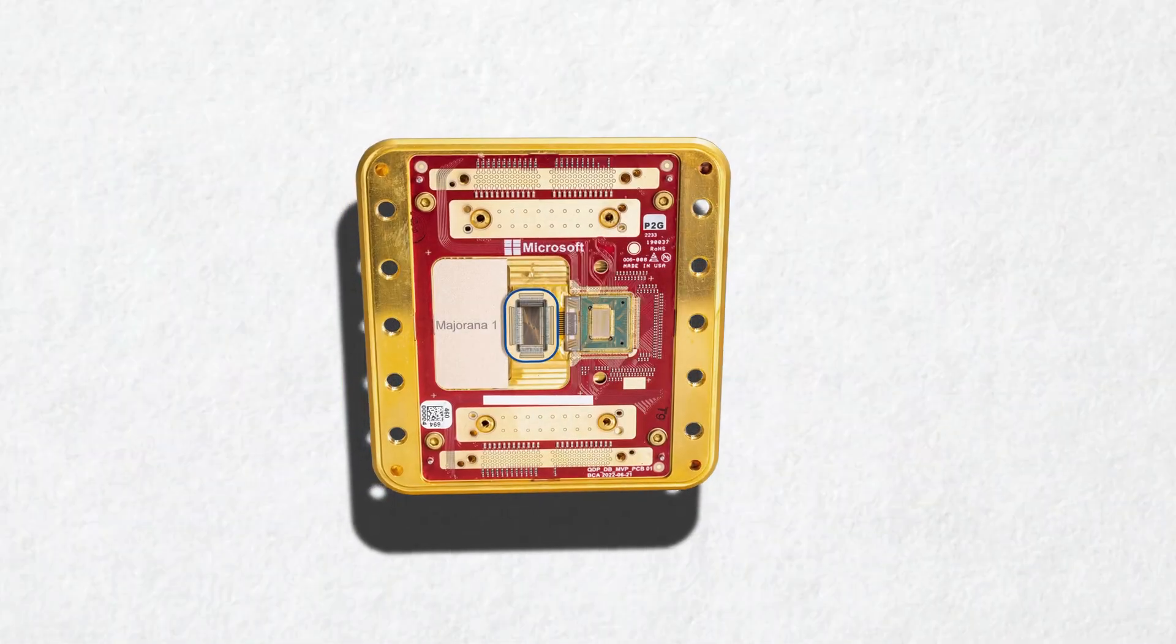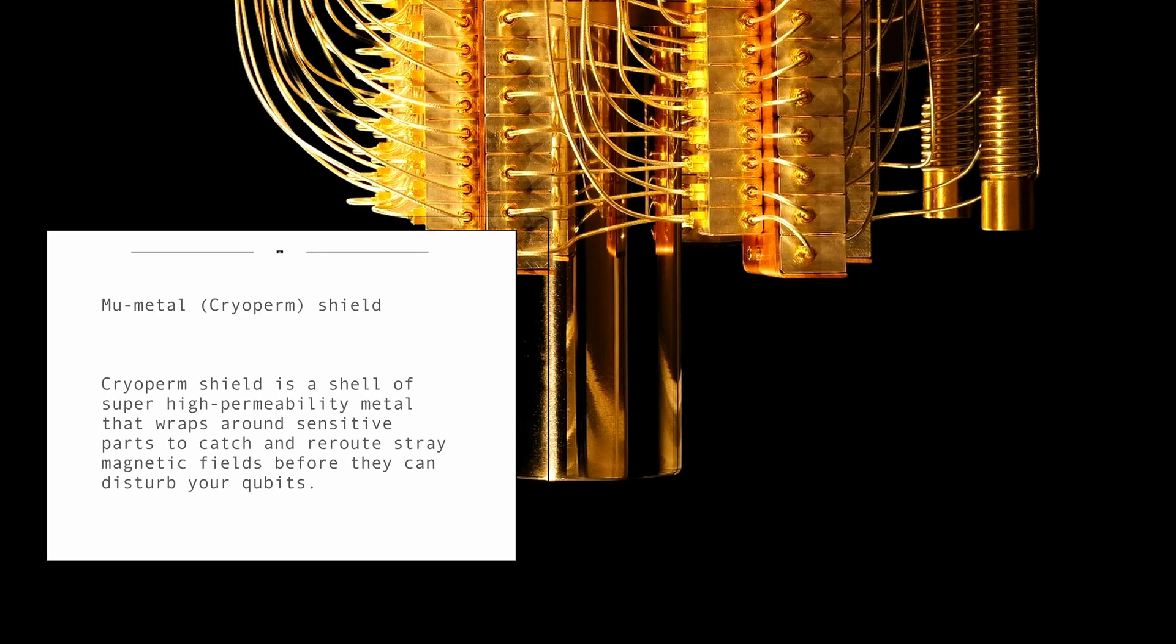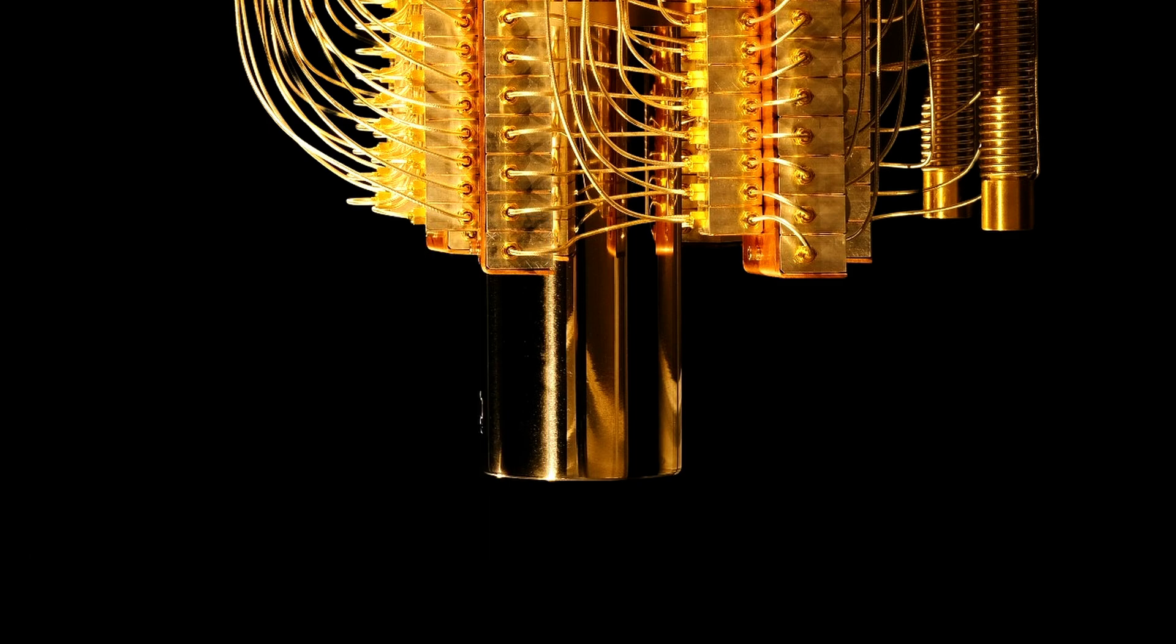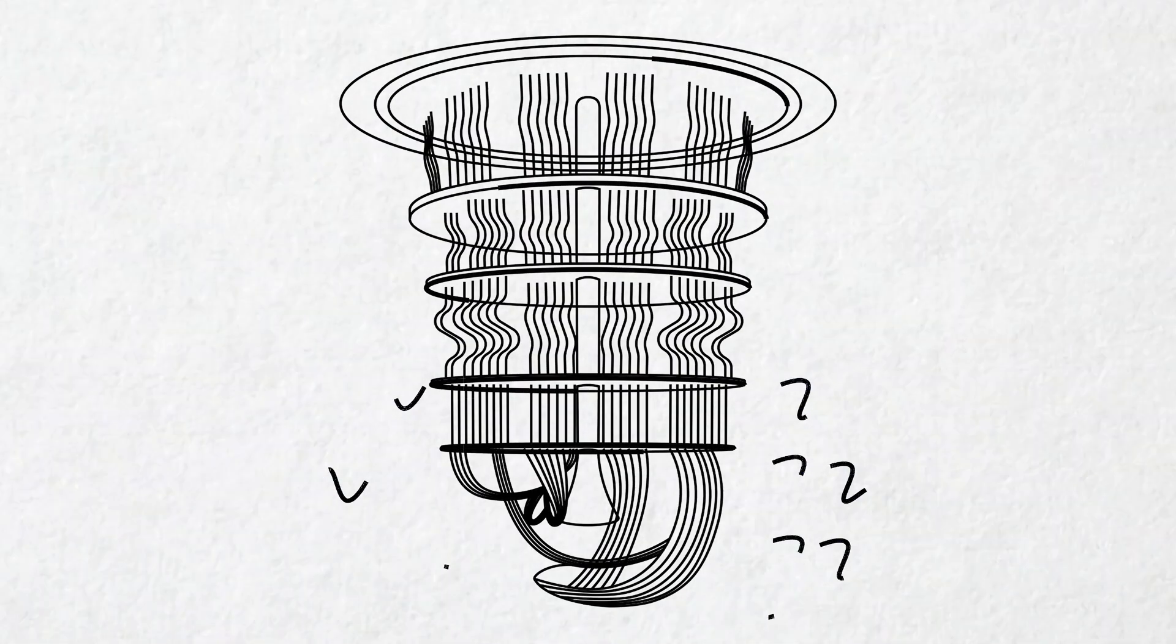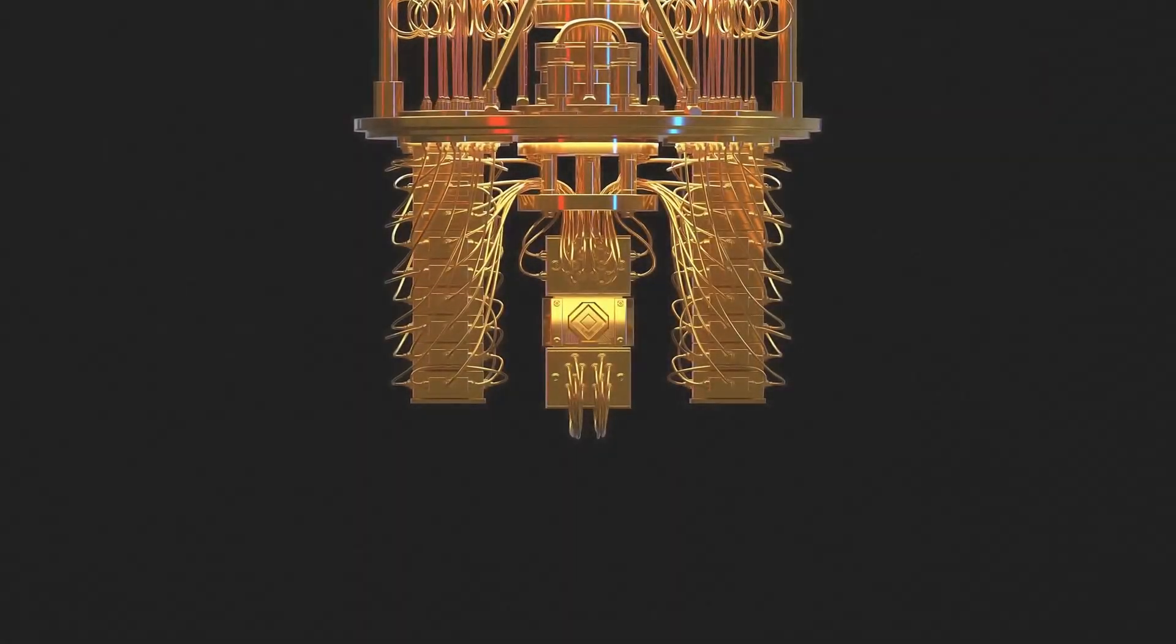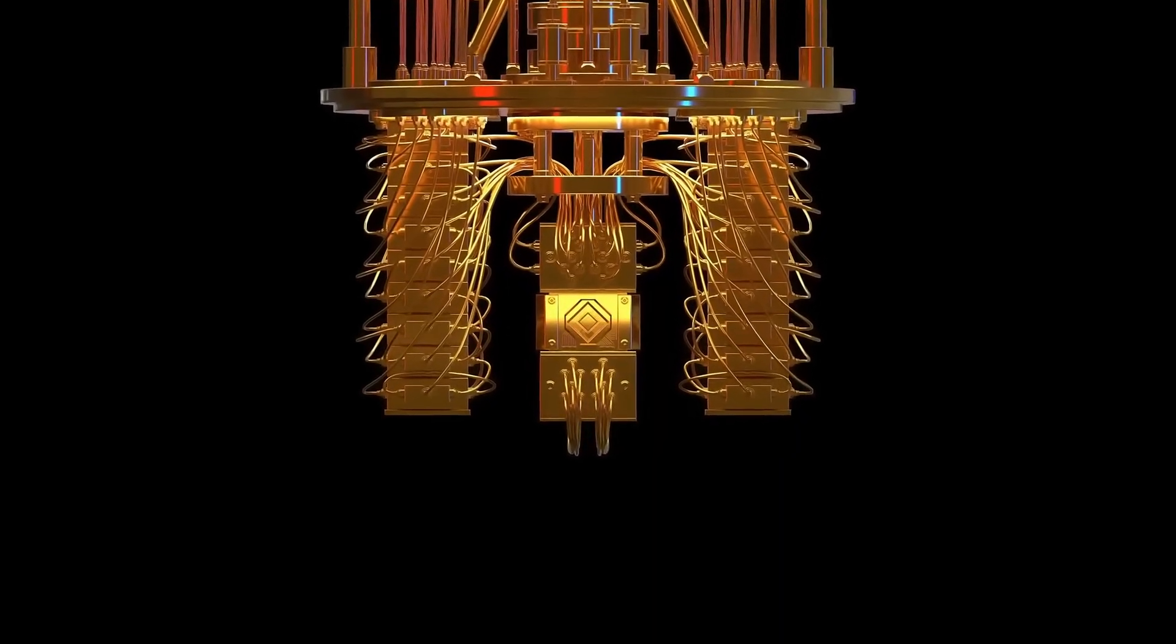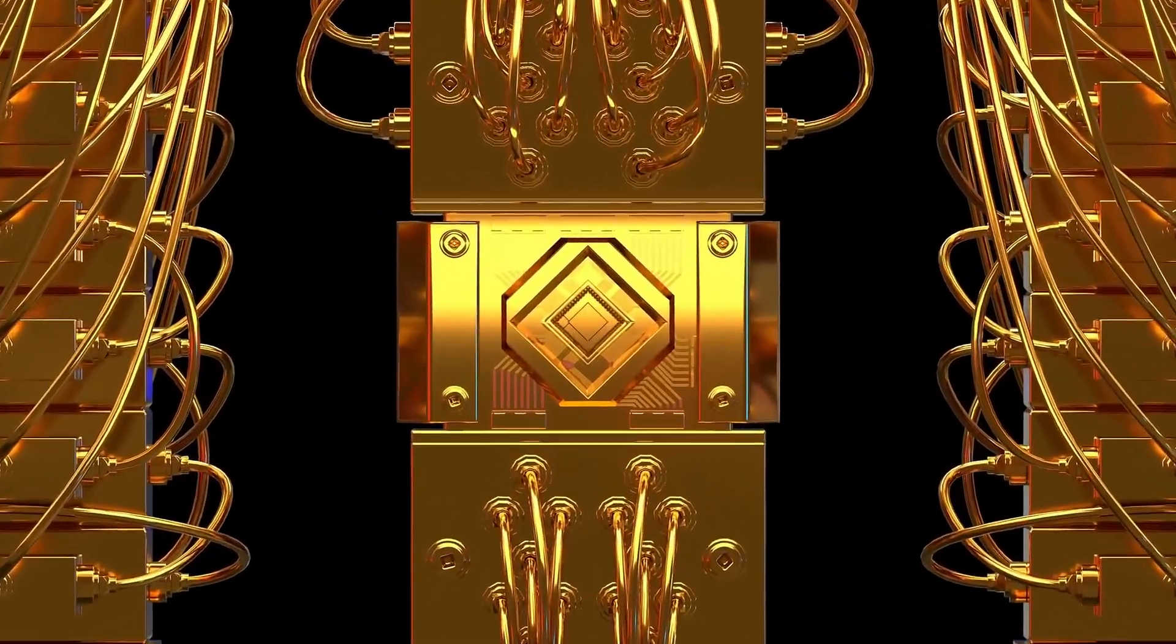The chip sits inside a mu-metal cryoperm shield. A mu-metal cryoperm shield is basically a shell of super-high permeability metal that wraps around sensitive parts of your quantum computer, like the quantum chip, to catch and reroute stray magnetic fields before they can disturb your qubits. Surrounding the chip, quantum amplifiers lie in wait, each one tuned to catch the faintest whisper of a qubit's microwave signal without disturbing it.